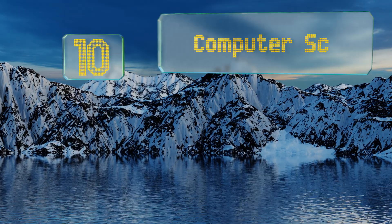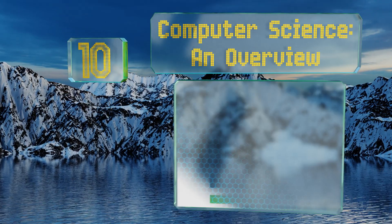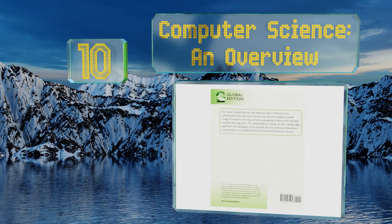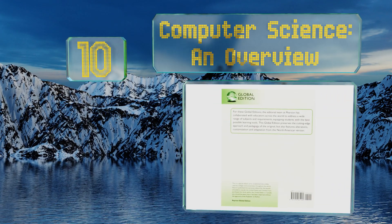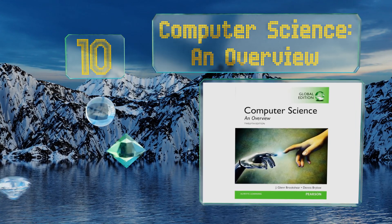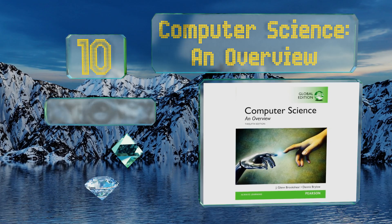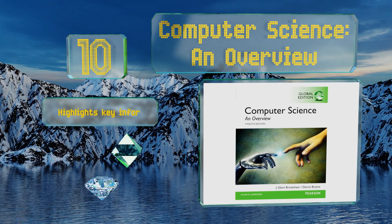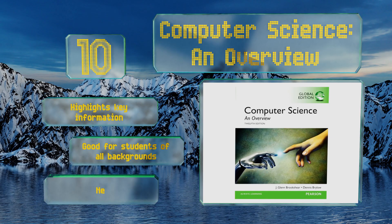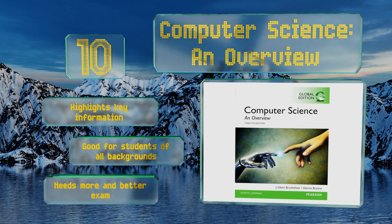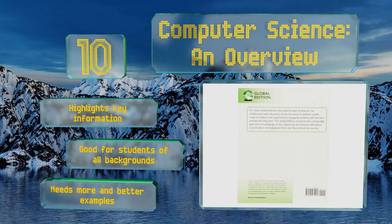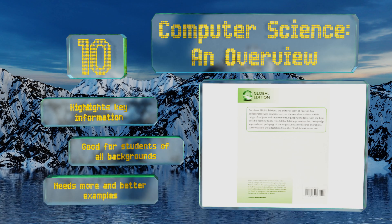Starting off our list at number 10, as its title suggests, Computer Science: An Overview is an introductory text meant to give readers a comprehensive picture of the field as it exists today. It forgoes the specifics to instead present fundamental concepts such as networking and data structures. It highlights key information and is good for students of all backgrounds.